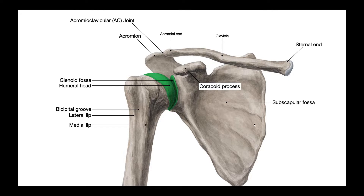The joint between the clavicle and acromion is the AC joint, or acromioclavicular joint. This large bone is the scapula. We're looking at an anterior view, and we can tell that for a couple of reasons. The coracoid process is more anterior, and the acromion is more posterior, so the coracoid appears closer to the viewer. Also, if we were looking at the posterior view, the spine of the scapula — a large horizontal protrusion — would be visible. We can't see a spine, so this must be the anterior view.